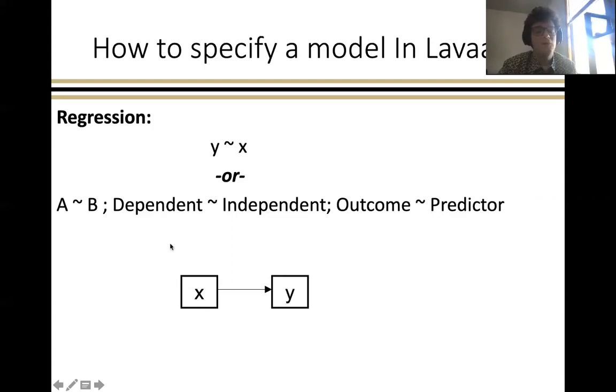Depending on how you think about variables in your model, you might think of that as reflecting a tilde b, dependent tilde independent, outcome tilde predictor, but of course you would name these according to the actual names of the variables in your data set. This is just to drive home the point that the outcome is on the left-hand side of this equation, and the predictor is on the right-hand side of the tilde over here.